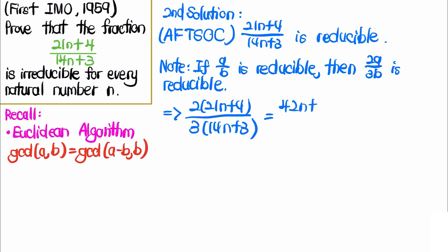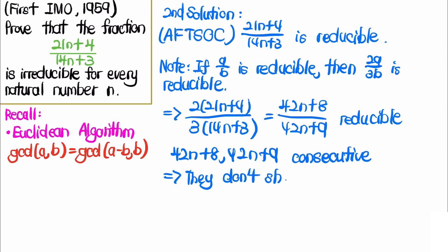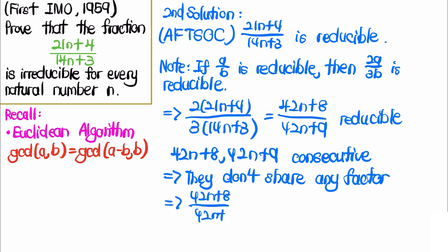Multiplying out, we get (42n + 8) / (42n + 9) should be reducible. However, we now have a problem: 42n + 8 and 42n + 9 are consecutive integers. Moreover, consecutive integers do not share any factor other than 1, so this fraction must be irreducible — which is a contradiction.